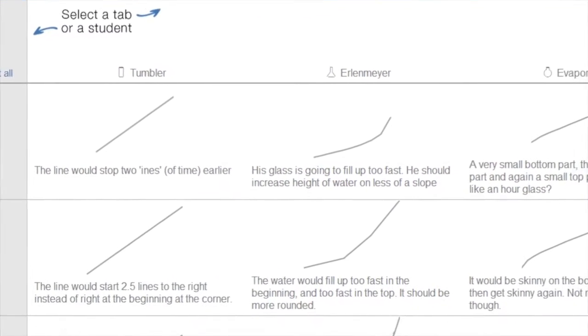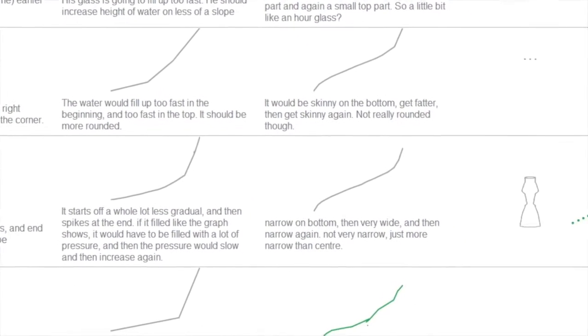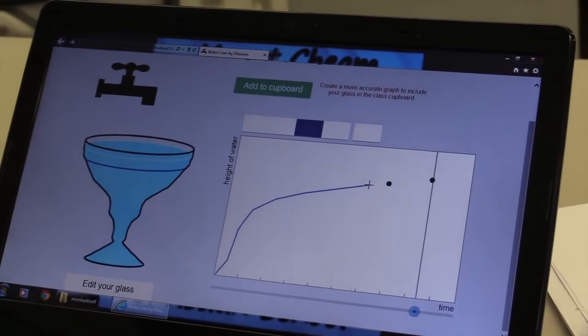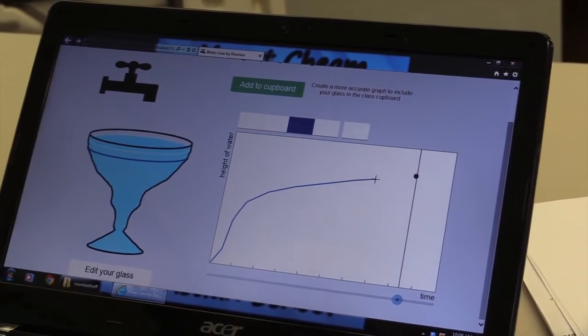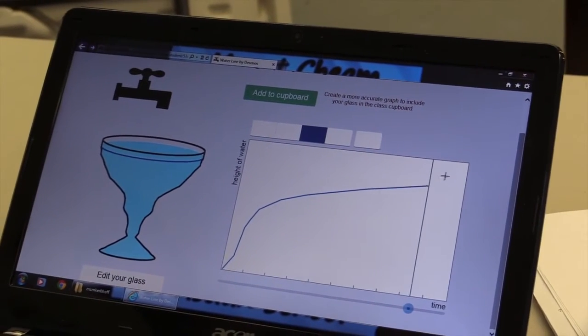As your students were working through the task, what kind of feedback were they given? They had instant feedback as they hovered their cursor on the graph, since the height of the water was shown on the beaker simultaneously. This gave them a sense of the scale and where their points should be roughly in terms of height, but not time.